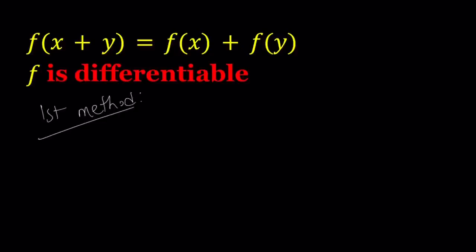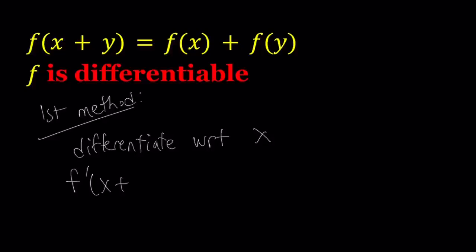Our first method depends on differentiating both sides — first with respect to x and then with respect to y. Differentiating with respect to x means we treat y as a constant. On the left hand side we get f'(x+y) from the chain rule. On the right hand side, f(x) becomes f'(x), but f(y) is a constant so it vanishes.